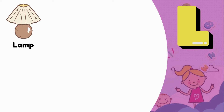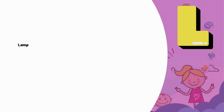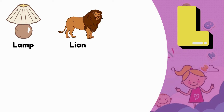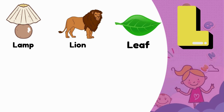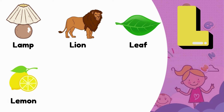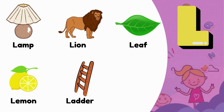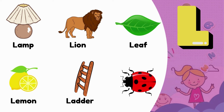L is for Lamp. L is for Lion. L is for Leaf. L is for Lemon. L is for Ladder. L is for Ladybug.